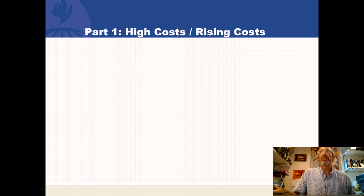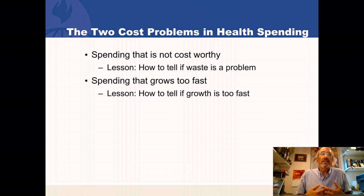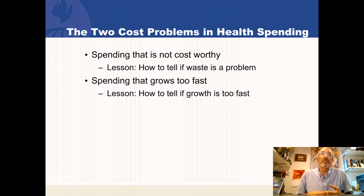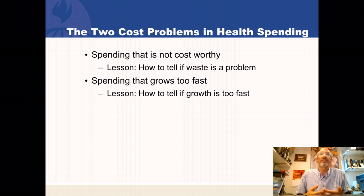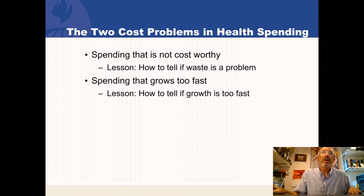The two ideas here are that there were both high costs and, over time, that the costs rise very fast. The idea of high costs isn't just that they're high, but that the costs are not worth it. We have to develop criteria to tell if it's not worth it — how do we tell that waste is a problem? And if costs are growing too fast, how fast is too fast? There are criteria — let's talk about it.